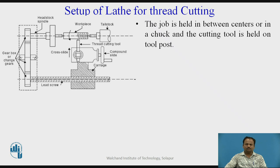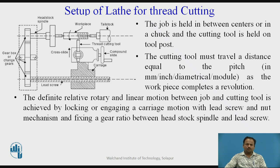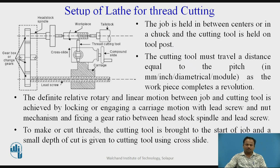This is the setup of lathe for thread cutting. The job is held between centers or in a chuck, and the cutting tool is held on the tool post. The cutting tool must travel a distance equal to the pitch — in mm, in inch, in diametrical, or in module — as the workpiece completes one revolution. The definite relative rotary and linear motion between the job and cutting tool is achieved by engaging the carriage motion with a lead screw and nut mechanism, and fixing a gear ratio between the headstock spindle and lead screw.